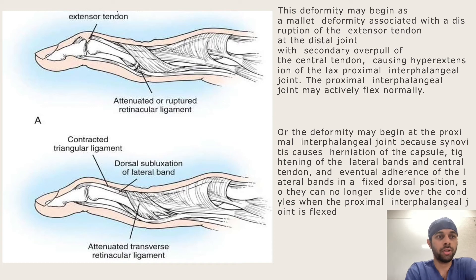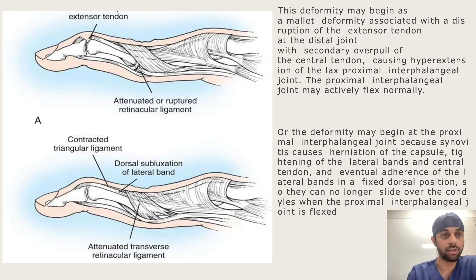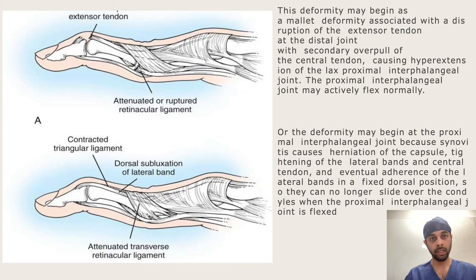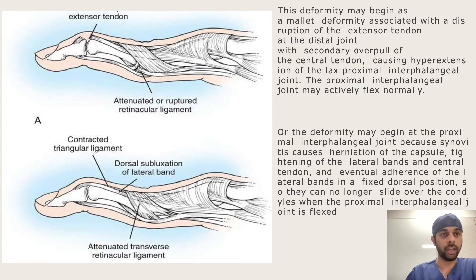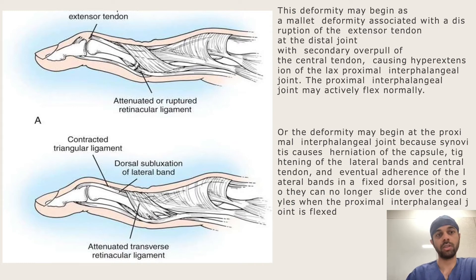There are two mechanisms by which the deformity can form. It may begin as a mallet deformity, associated with rupture of the extensor tendon at the distal joint. The tendon ruptures, resulting in laxity of the PIP joint, and now the central tendon — overpowering the distal tendon — starts to hyperextend the proximal interphalangeal joint. Initially, the PIP joint may still be able to flex normally, but as time passes it further deforms and gets into a fixed position.